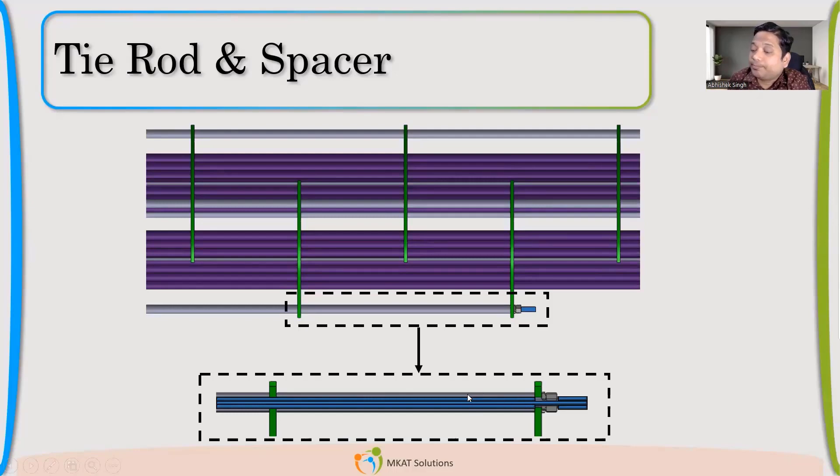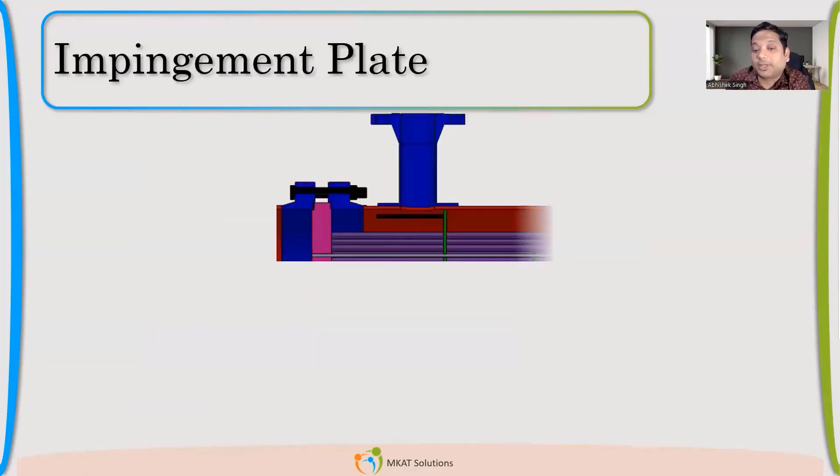So that we place at the outside of tie rod. And once you tighten the bolt. Whatever length that spacer is having. With that your all the baffles will be tighten. So they will not flow. So it will reduce the vibration also. That is the rule of tie rods and spacer.